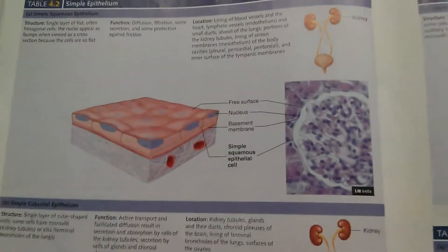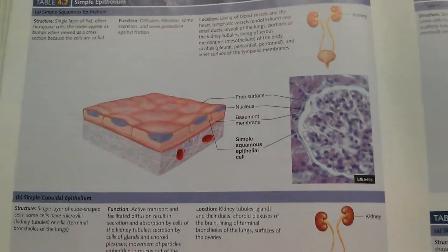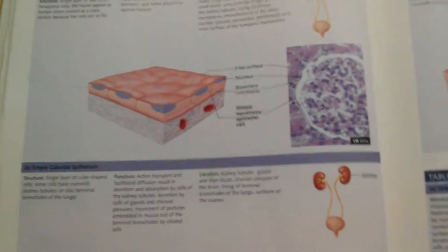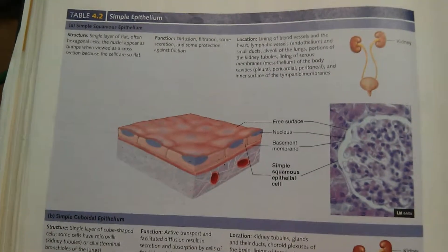We are in chapter 4 talking about different tissues. Right now we're talking about epithelium — where you will find them in the body, what they look like, and what their function is.